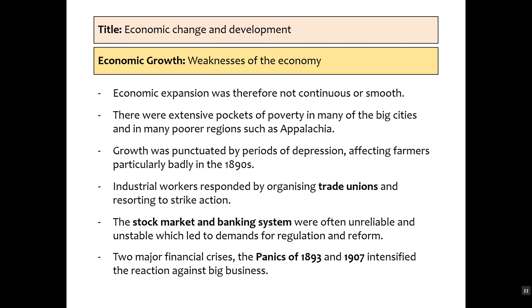There are significant weaknesses to the economy. Economic expansion was not continuous and smooth — it was focused very much in big cities, and there were poor regions, particularly across Appalachia. Growth was punctuated by periods of depression. Conditions that populists and progressives rallied against caused ordinary workers to join trade unions, leading to huge amounts of industrial action in the form of strikes. The stock market and banking system was unreliable and unstable — there was no single Bank of America — as seen in the panics of 1893 and the Depression of 1907.